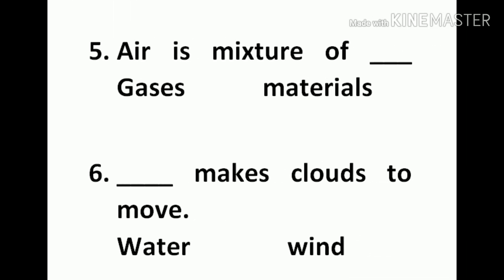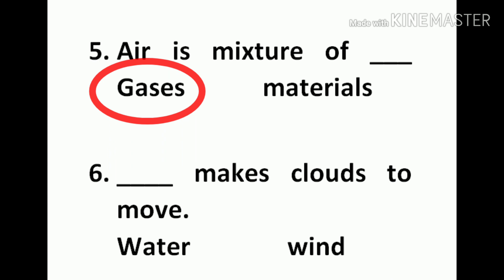Number 5: Air is the mixture of dash — gases or materials? The right answer is materials. Number 6: Dash makes clouds to move — water or wind? The right answer is wind.